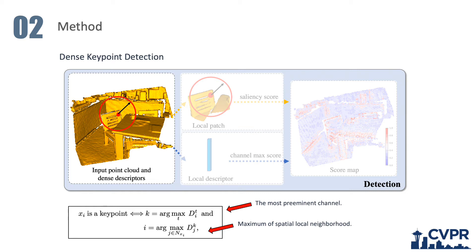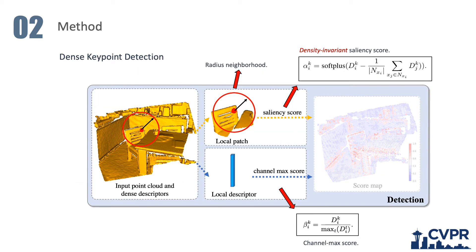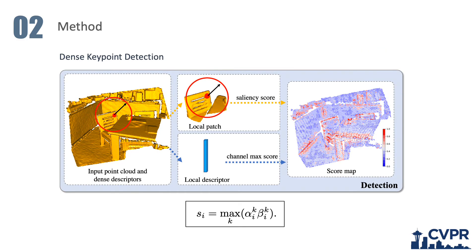During training, we soften the above process to make it trainable by applying two scores. First, we design a density-aware saliency score to measure how salient a point is compared with other points in its local neighborhood. This formulation is not affected by the number of points in its local neighborhood, thus significantly improving the network's ability to handle key point detection with varying density. Then, a channel max score is designed to pick up the most prominent channel for each point, and both scores are taken into account for the final key point detection score.